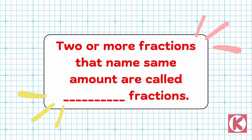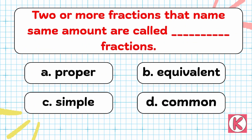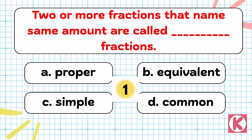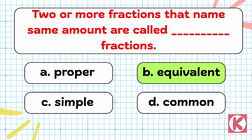Question No. 2. Two or more fractions that name the same amount are called dash fractions. Right answer: Option B — Equivalent fractions.